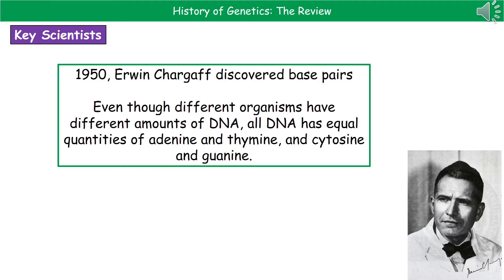Moving six years further forward to 1950, we find Erwin Chargaff. His key discovery was base pairing. What he actually noticed was that even though different organisms have different amounts of DNA, no matter what organism he looked at, the DNA had equal quantities of adenine and thymine, and cytosine and guanine. So he came up with the idea that adenine and thymine must go together and cytosine and guanine must go together. This has been linked to an exam question where you're told it's 24% adenine and asked to work out the percentages of the other bases — thymine would also be 24%, then divide the remainder by two to give you cytosine and guanine.